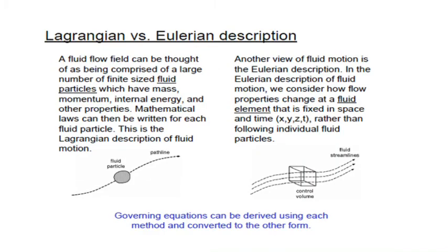Lagrangian versus Eulerian descriptions. In the Lagrangian description, a fluid flow field can be thought of as being comprised of a large number of finite-sized fluid particles which have mass, momentum, internal energy and other properties. Mathematically, these laws can be written for each fluid particle, as shown in the diagram.